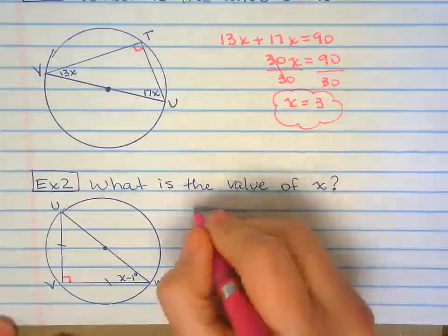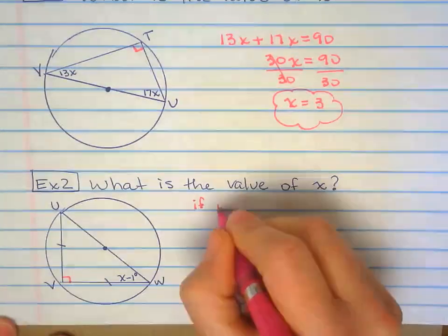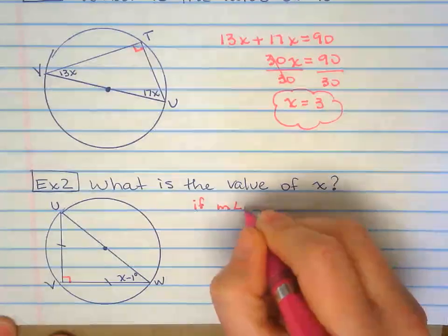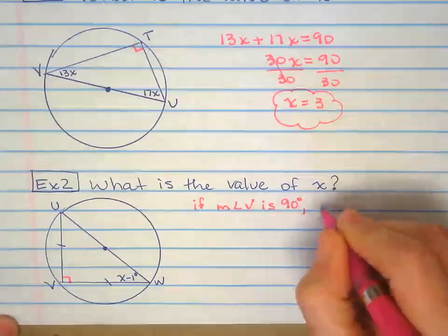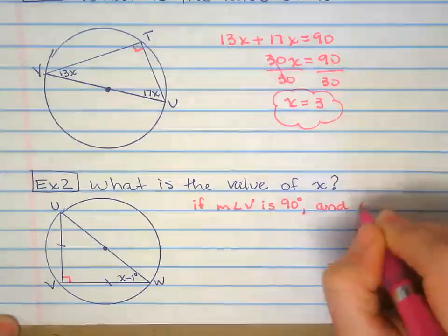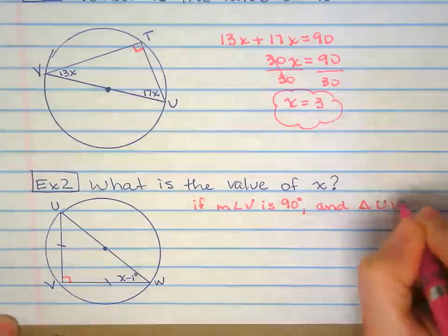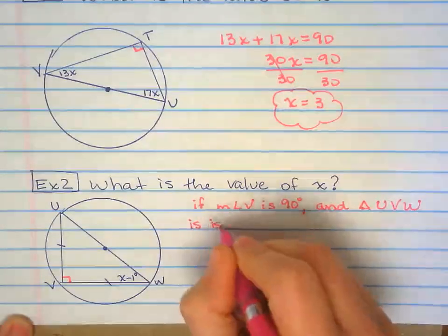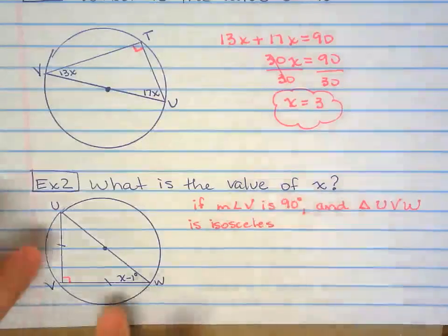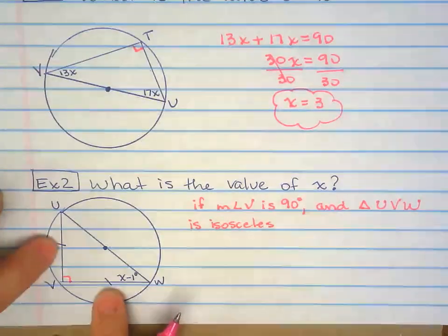So I'm just going to write it out that way you have that on your notes. So if measure angle V is 90 degrees, or is a right angle, and the triangle U, V, W, is isosceles. Because it's noted right there. These two sides are congruent.